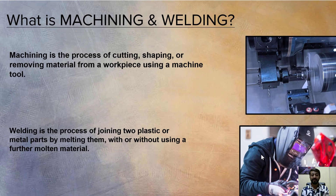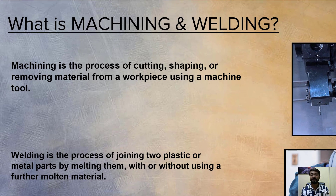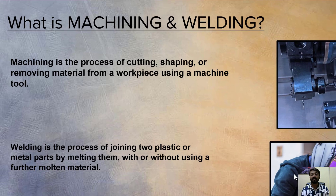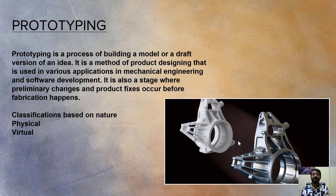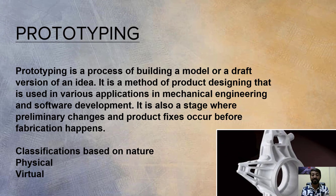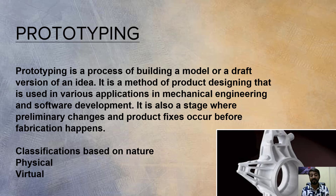The next domain is machining and welding. Machining is the process of cutting, shaping, or removing material from a workpiece using a machine tool. Majorly, the CNC application of G-code comes under machining, and there are various kinds including vertical machining, differing by axis. Welding is the process of joining two plastic or metal parts by melting them, with or without using a filler molten material. Prototyping is the process of building a model or draft version of an idea to reduce manufacturing cost. It is a method of product designing used in mechanical engineering and software development, and it is the stage where initial changes and fixes occur before fabrication, reducing the overall cost of manufacturing.